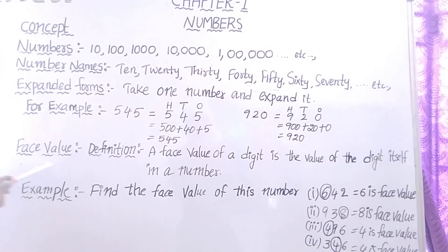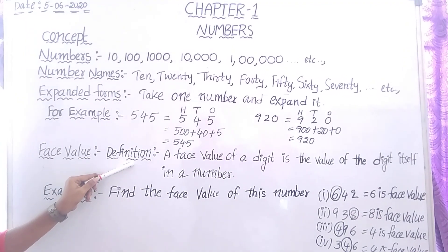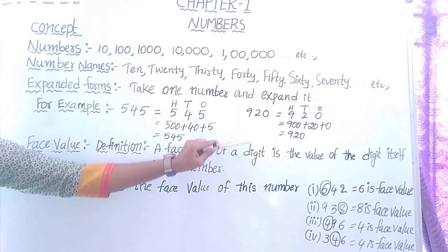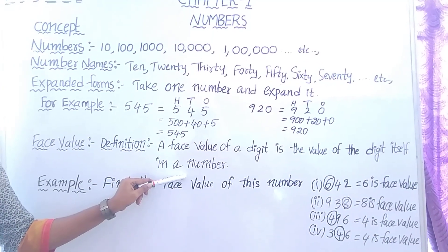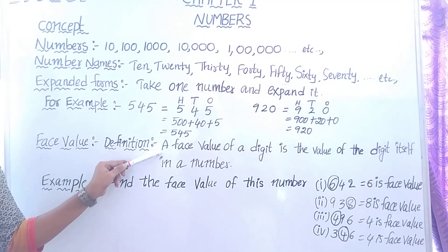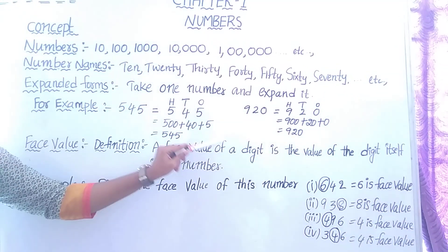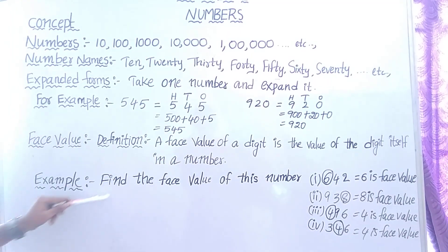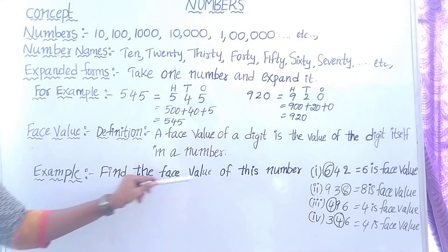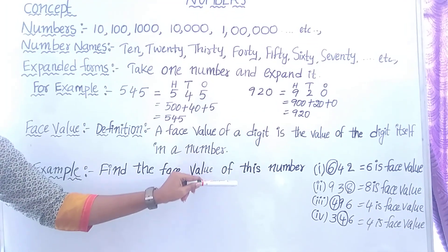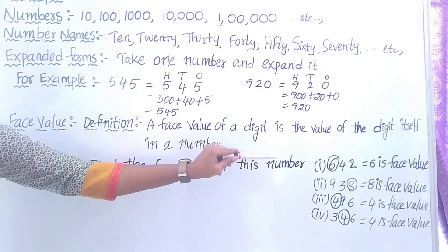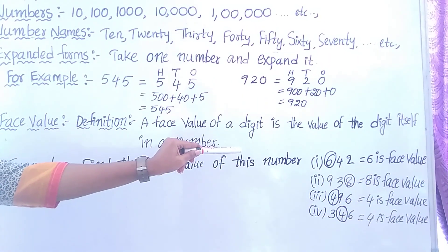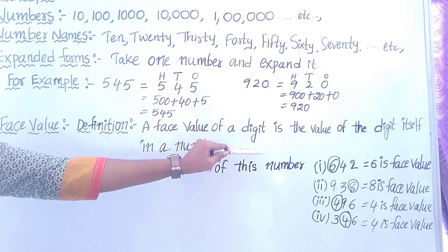Next, face value. Write the definition of face value: the face value of a digit is the value of the digit itself in a number. For example, find the face value. Here some numbers — first one: 6, 4, 2. See here, dear students — 6 is circled, so 6 is the face value of this number.